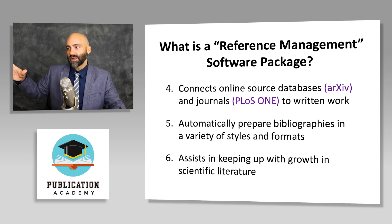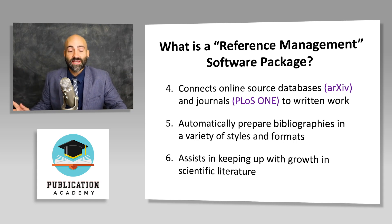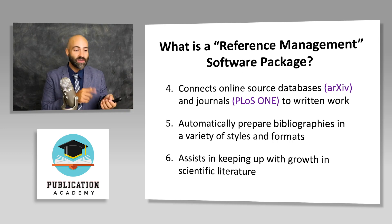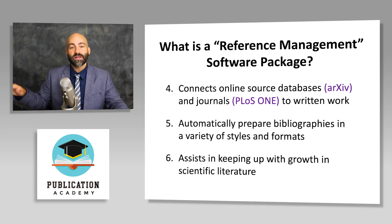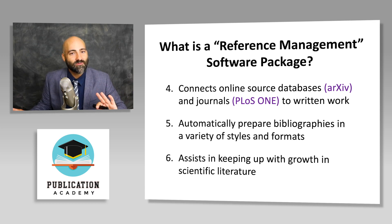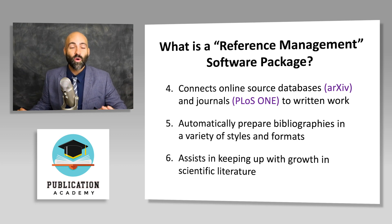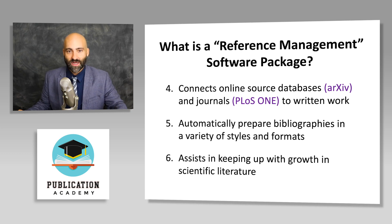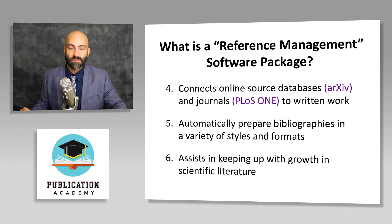Decades ago, a professor could manage with filing cabinets full of journals because there weren't as many scientists, journals, or articles. You'd get the monthly journal issue and leaf through it picking out two or three interesting papers. But today there are 1.5 million journal articles appearing every year — that's one new journal article every 20 seconds on average. By the time a sentence is finished, a new journal article has appeared somewhere in the world. There are simply too many scientists publishing too frequently to keep up manually.